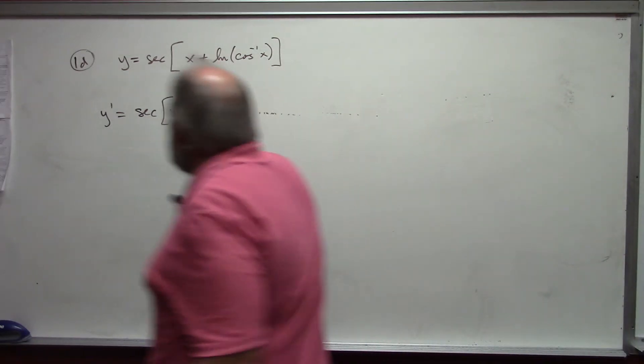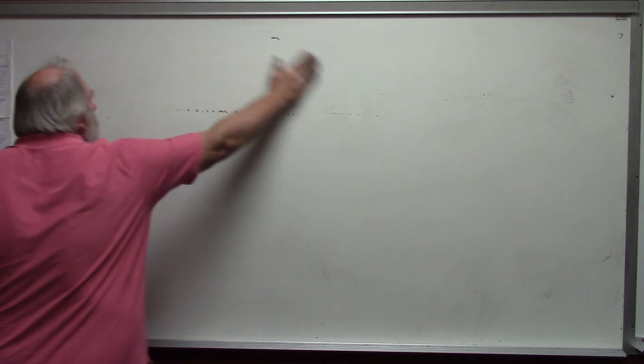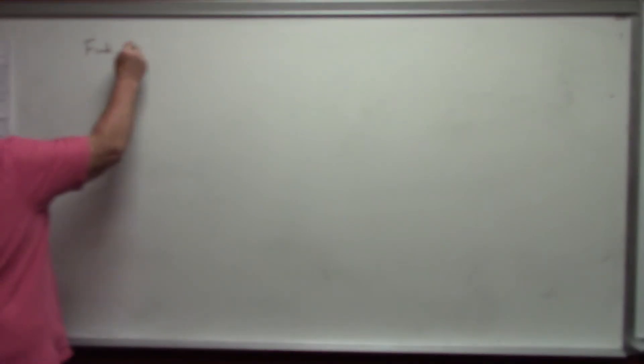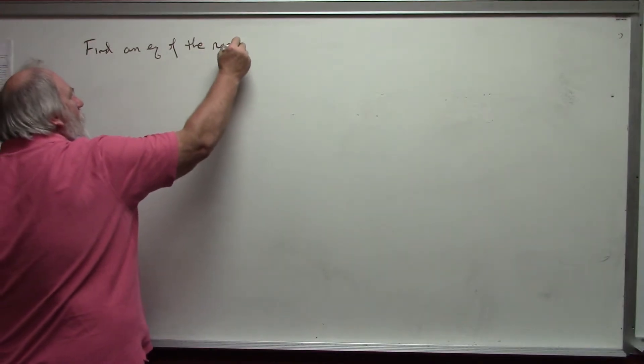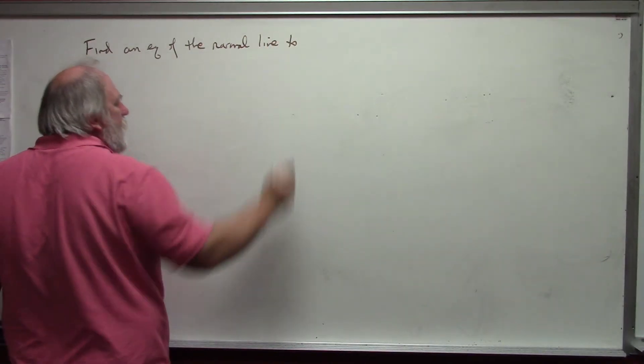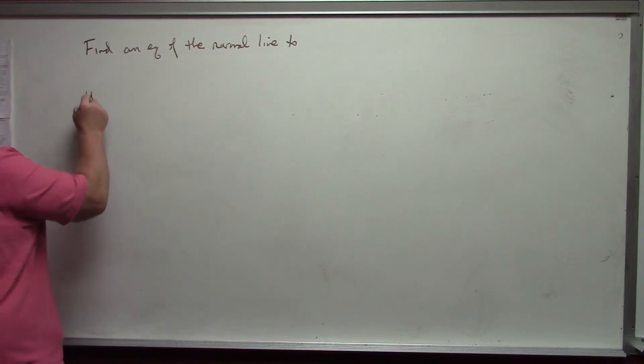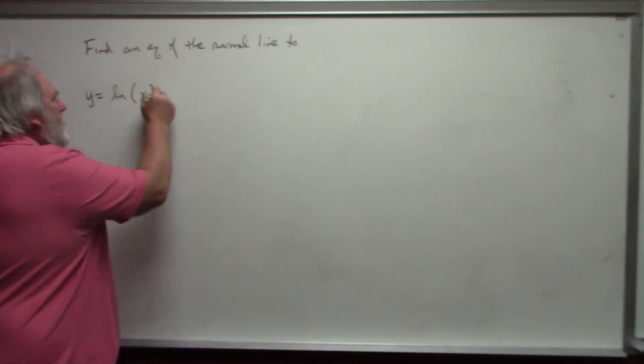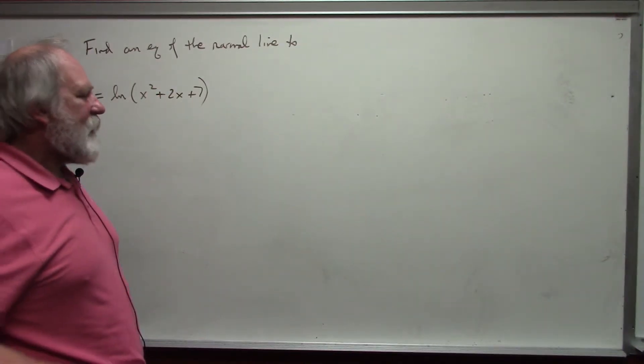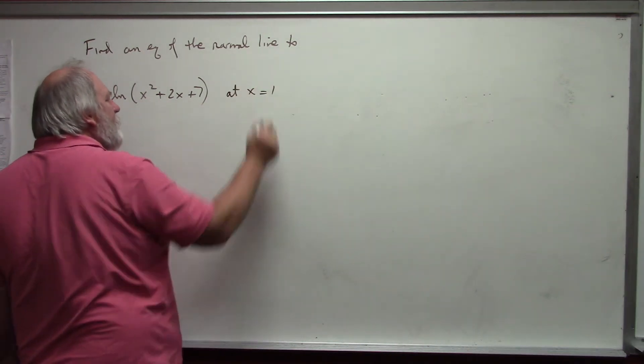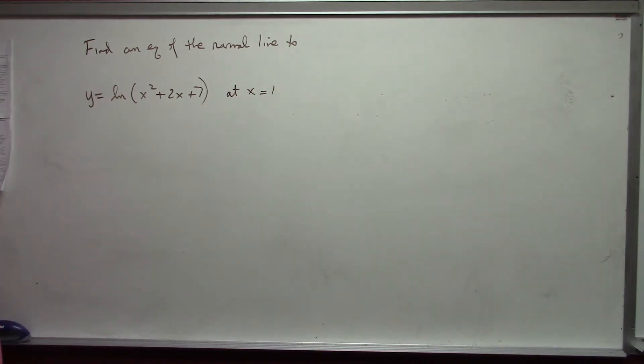One last problem. An application. I want to find an equation of the normal line to y equals the natural log of x squared plus 2x plus 7 at x equal 1. So, to get the equation of the normal line, I need the derivative.